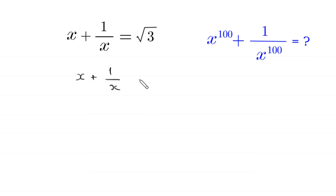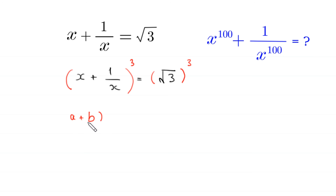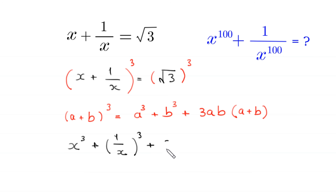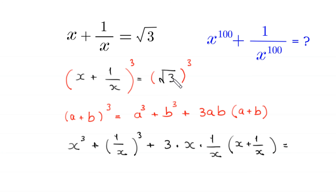Let's start by taking the cube of both sides. We have the given equation x plus 1 over x is equal to root 3. By using the algebraic identity — a plus b whole cubed is equal to a cubed plus b cubed plus 3ab times a plus b — this x plus 1 over x whole cubed will become x cubed plus 1 over x cubed plus 3 times x times 1 over x times x plus 1 over x.